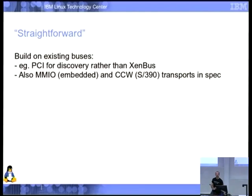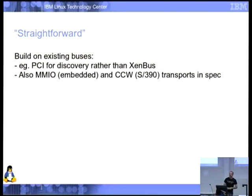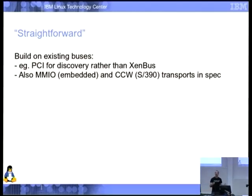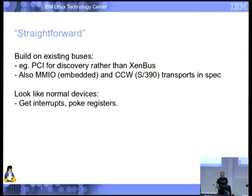There's also MMIO, an alternate bus in the standard basically designed for embedded systems — not really a bus at all, just a page of registers. Generally the device tree informs the guest what it has, or even the kernel command line in Linux. And for the S390 folks, there's the CCW transport, which is much more compatible with what they do since they traditionally don't support PCI. Straightforward also means these things should look like normal devices — you poke the registers and they interrupt you when things happen.